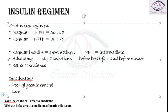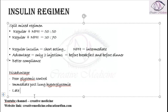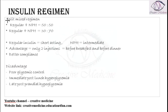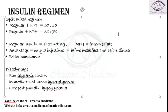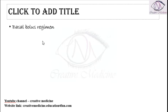Regular insulin peaks at 4 hours with a duration of 8 hours, whereas NPH peaks at 6 to 12 hours with a duration of 18 to 24 hours. It has been reported that there is immediate post-lunch hyperglycemia, and a few hours after lunch, late post-prandial hypoglycemia occurs due to the combined action of short-acting and intermediate-acting insulin.